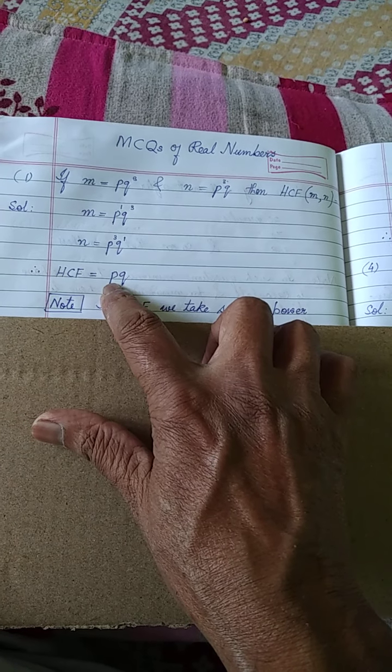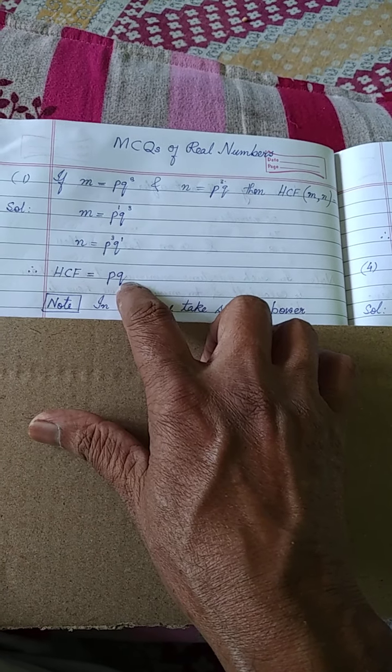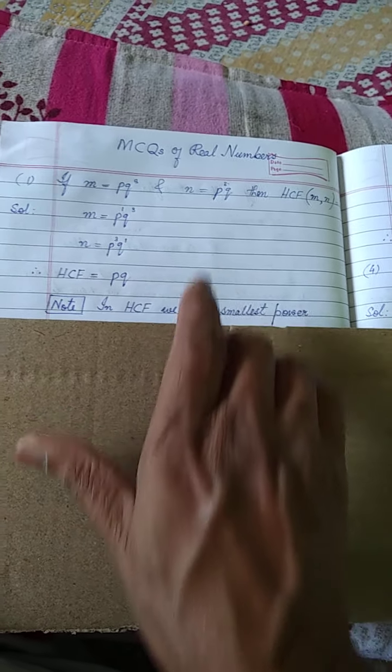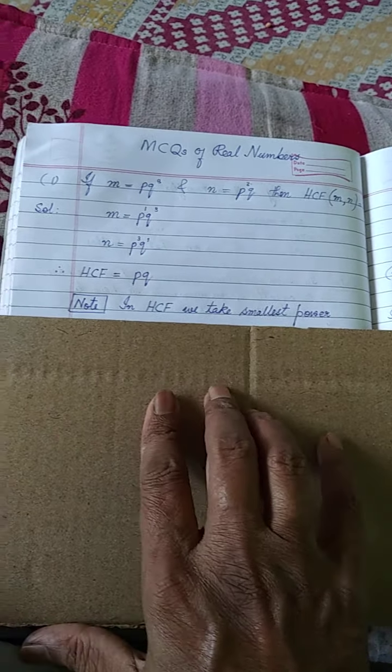P raised to the power 1 and Q raised to the power 1 will be PQ. So this is the HCF.